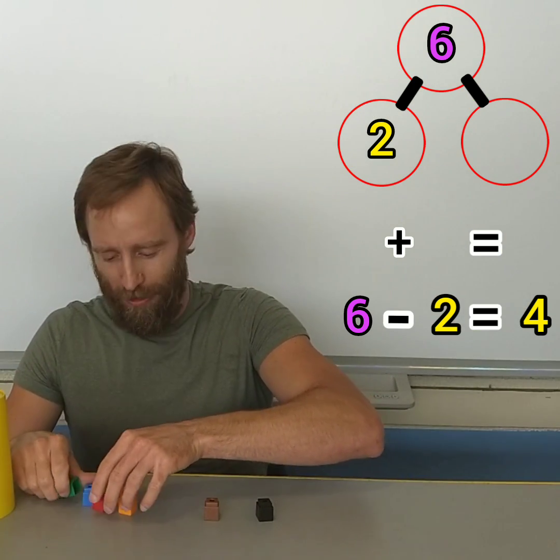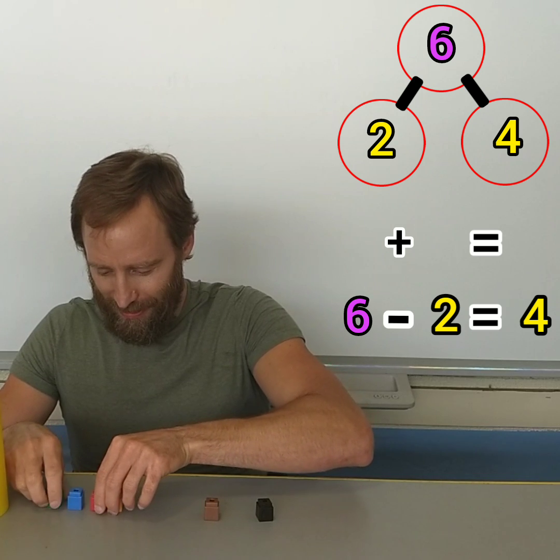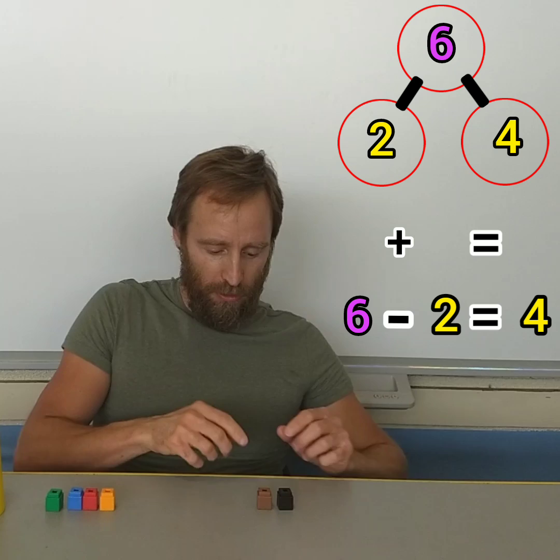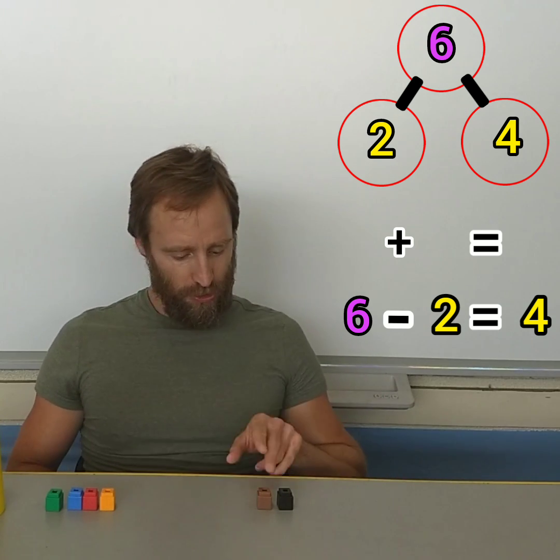Goodness gracious. There are four under here. Look at that. The green one, the blue one, the red one, and the orange one. And here is my two, the brown and black one. Two and four.